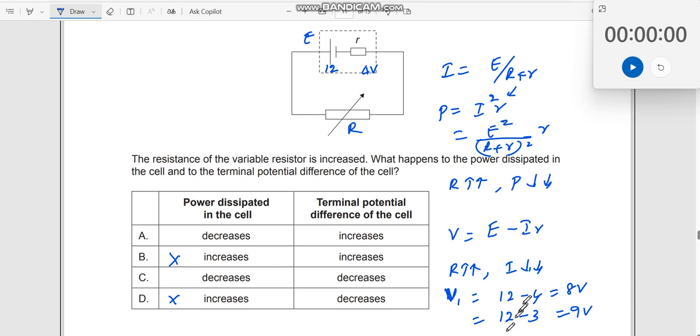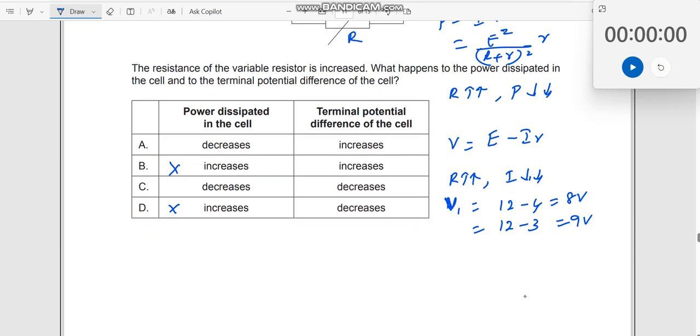So what is happening then? That means for every decrease in the current. So for example, next value could be 12 minus 2, which will be 10 volt over here. For every decrease in the current, the terminal potential difference seems to be increasing, which means which is the right answer. This is also wrong because it decreases here. So this is the right answer. Okay.